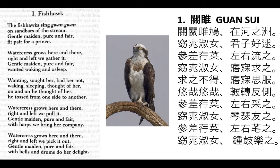Fishhawk. "The fishhawks sing 'guang guang' on sandbars of the stream. Gentle maiden, pure and fair, fit pair for a prince. Watercress grows here and there, right and left we gather it. Gentle maiden, pure and fair, wanted, waking, and sleeping. Wanting, sought her, had her not. Waking, sleeping, thought of her. On and on he thought of her. He tossed from one side to another. Watercress grows here and there, right and left we pull it. Gentle maiden, pure and fair, with harps we bring her company. Watercress grows here and there, right and left we pick it out. Gentle maiden, pure and fair, with bells and drums do her delight."